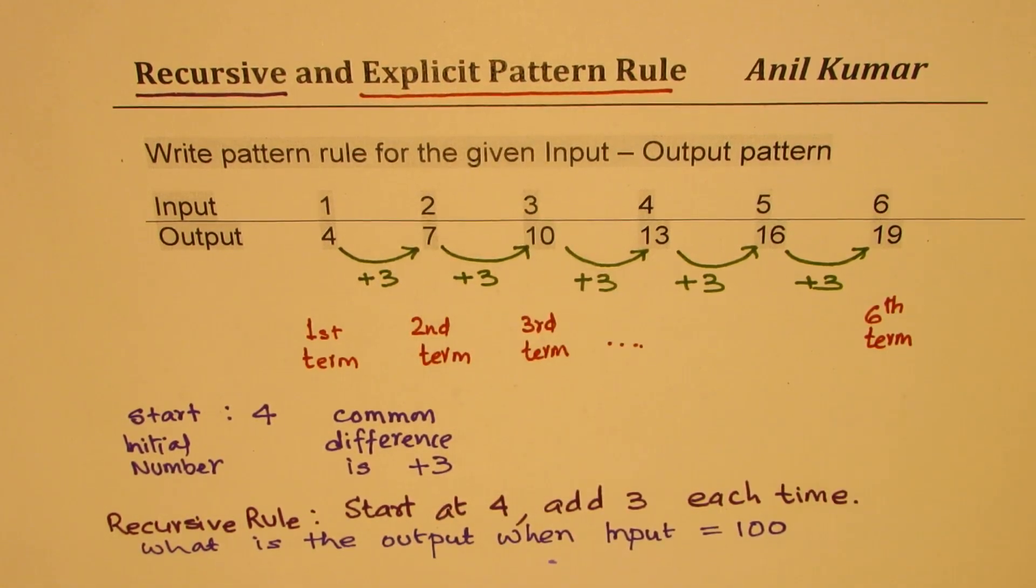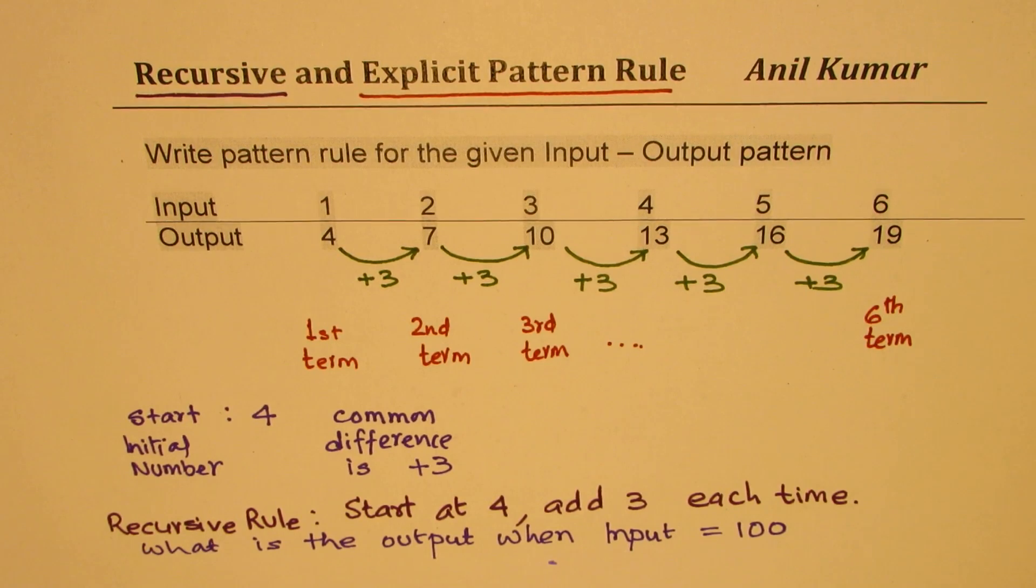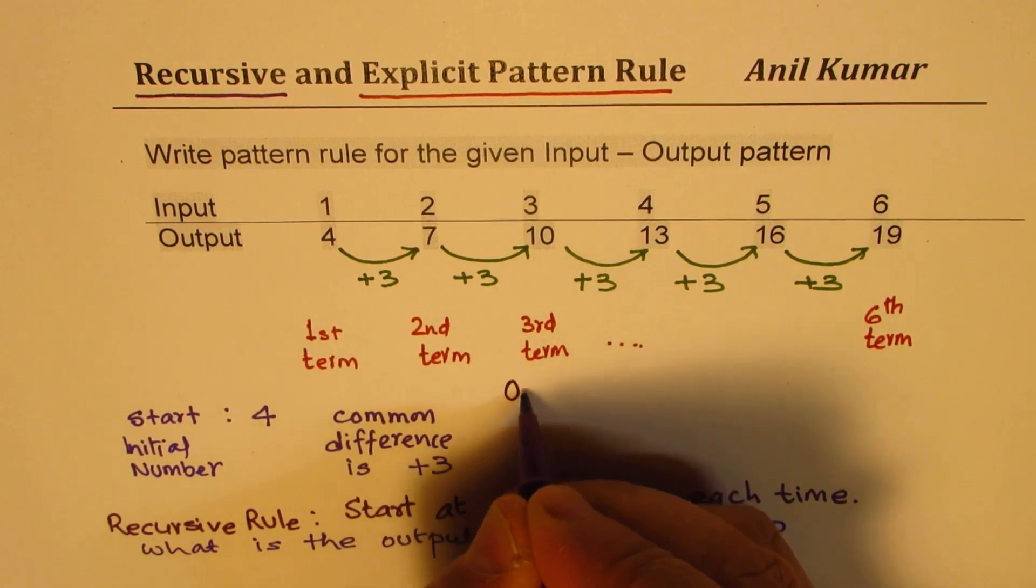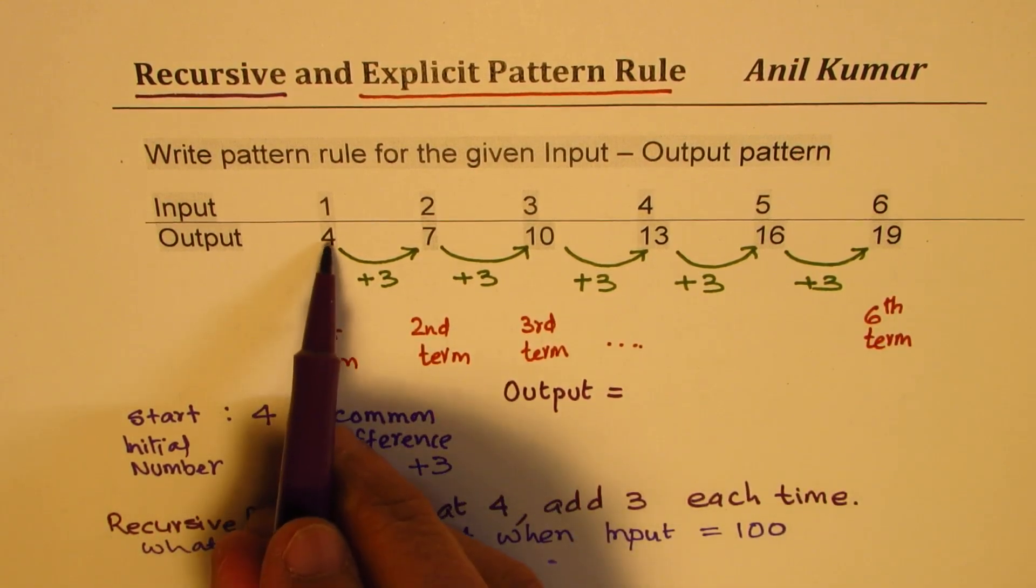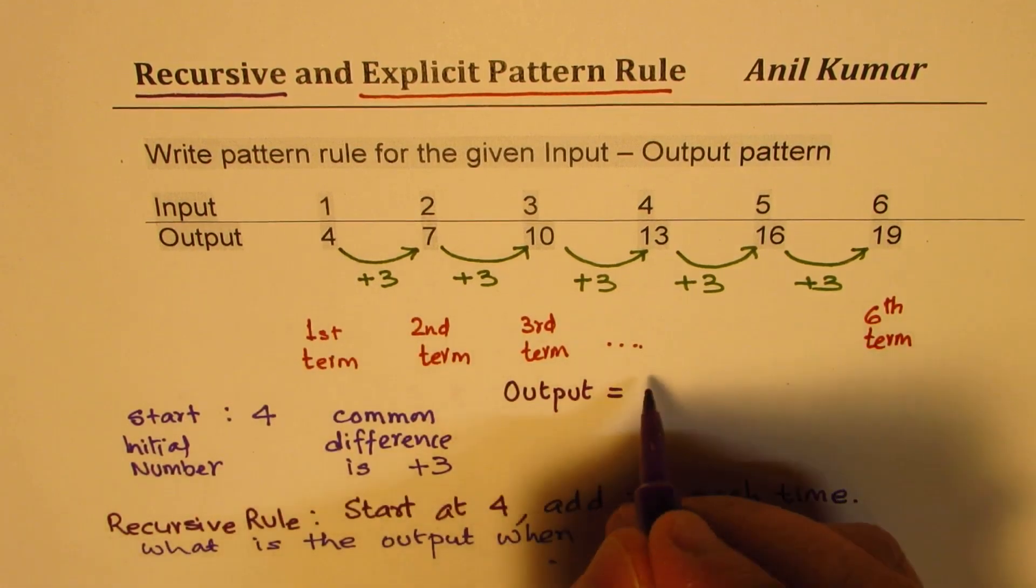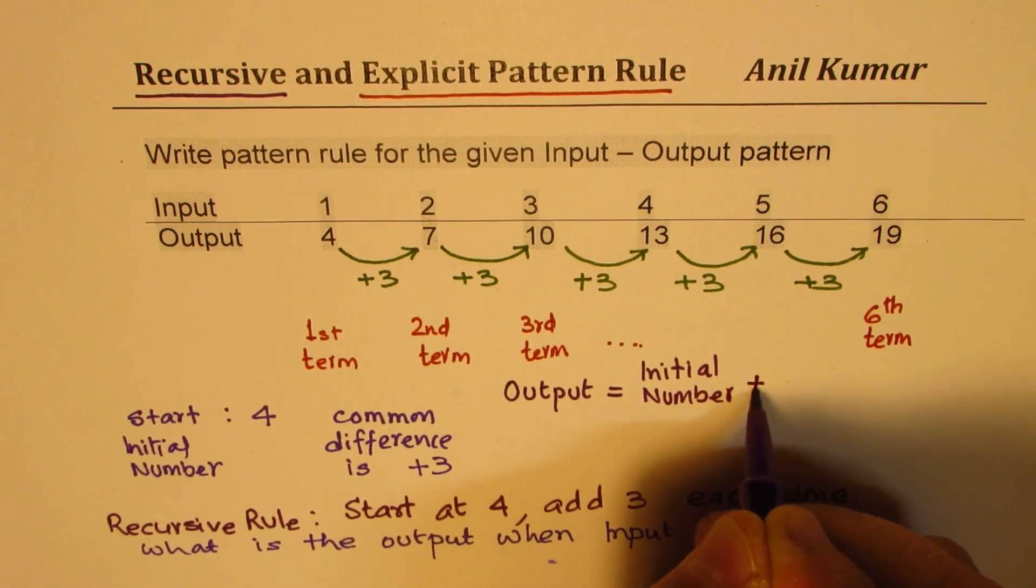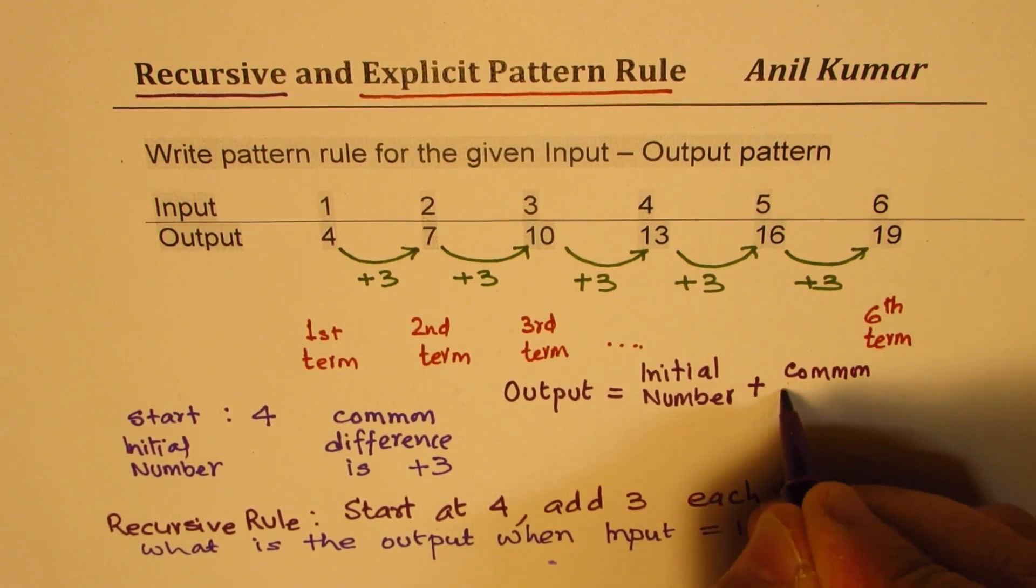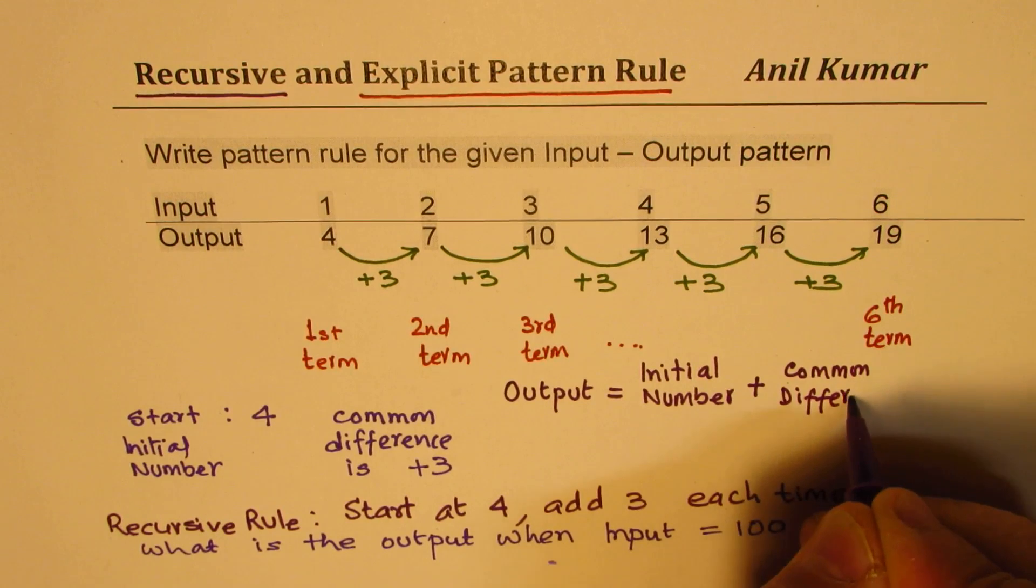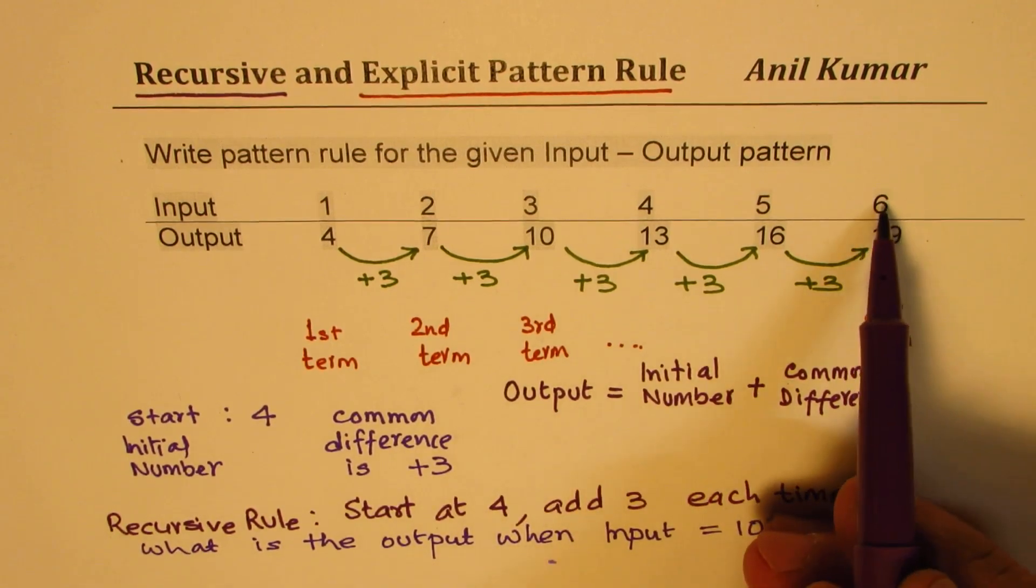Let me show you how. Now if you notice we start at 4. So if you want to find output, let me write here output equals it is definitely more than 4. We have to add something to 4 which is our starting number which we say initial number plus common difference. How many times?